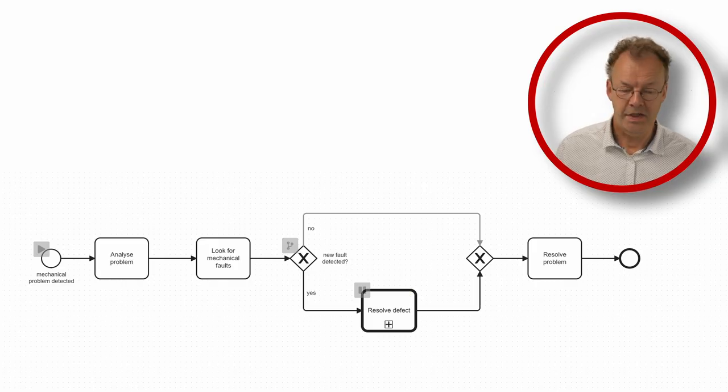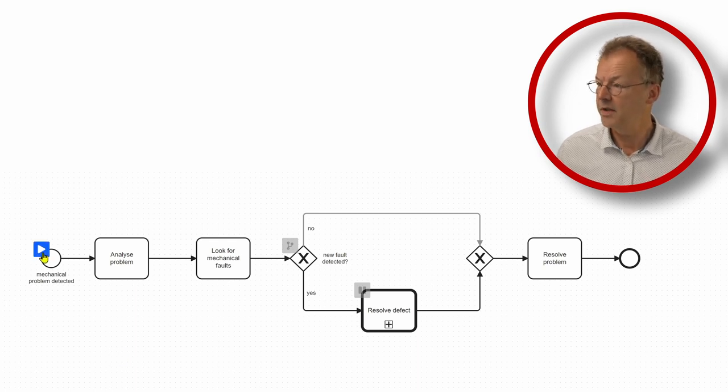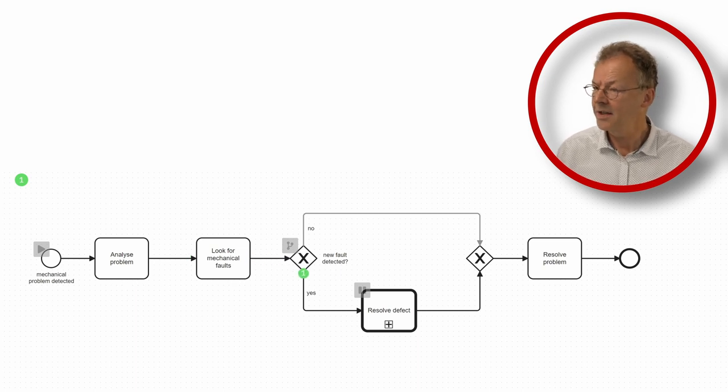We have the process here and the token animation doesn't really support this recursive behavior. So we start with a mechanical problem, we analyze it, look for mechanical faults and let's assume we find another mechanical fault.